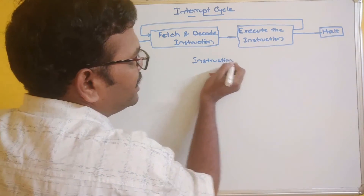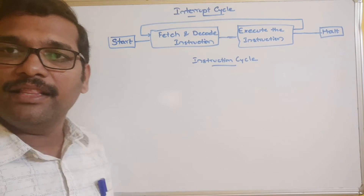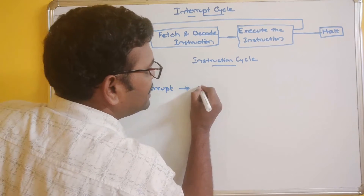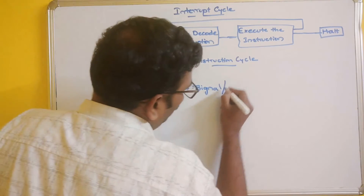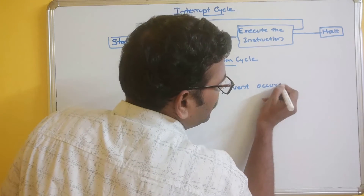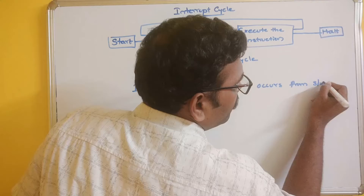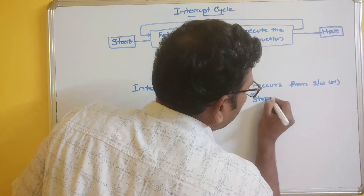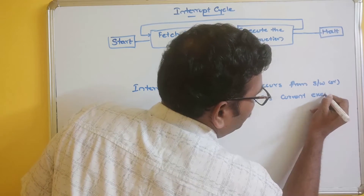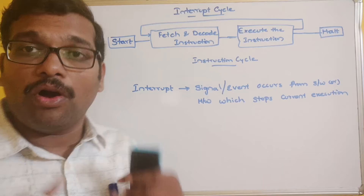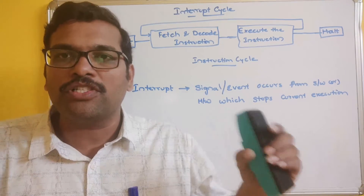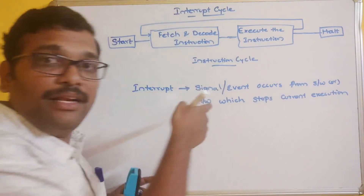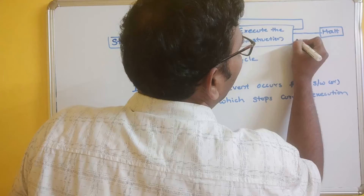During the instruction cycle, there might be a chance of getting interrupts. An interrupt is a signal or event that occurs from software or hardware which stops the current execution. That is why we call it an interrupt — it interrupts the normal process of execution. In the basic instruction cycle shown, there is no provision for interrupts, so this is also called the instruction cycle with interrupts disabled.